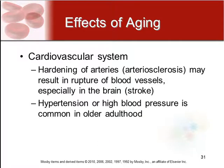There is also the hardening of arteries, called arteriosclerosis, which could eventually result in the rupture of blood vessels. This is why we see a more common occurrence of stroke in older adults, as this happens to one of the vessels in the brain.